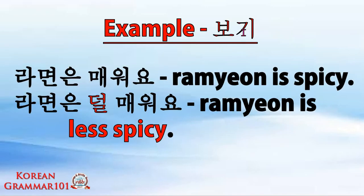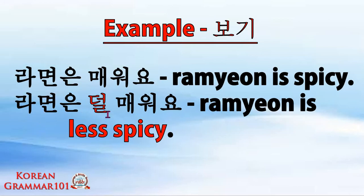Example with an adjective: ramyeonun mewoyo — ramyeon is spicy. How about we put 덜 (dol)? Just like with 더 (do), you put 덜 before your adjective. It becomes ramyonun dol mewoyo — ramyeon is less spicy. By putting the word dol before your adjective, it becomes 'less' plus your adjective.